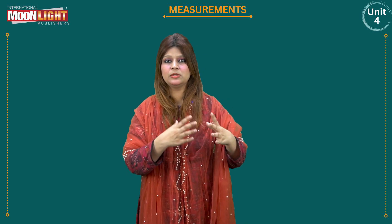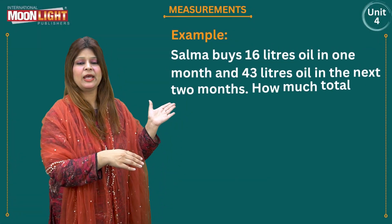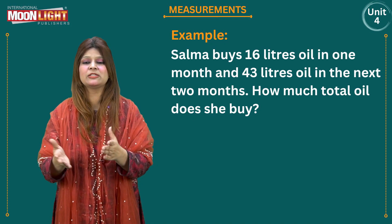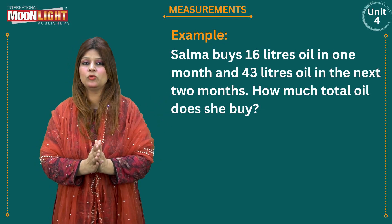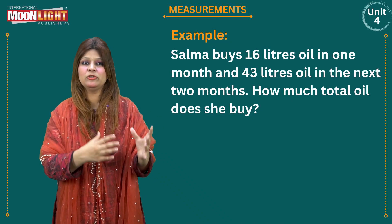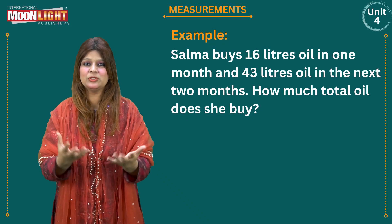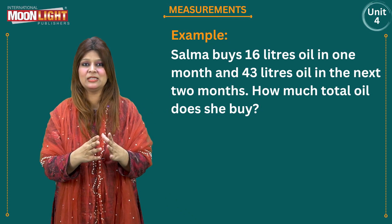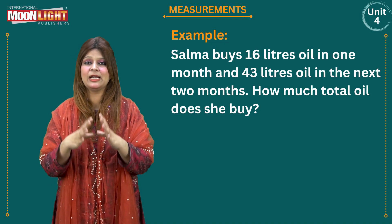We have so many situations in our real life that we are going to face. I have taken this example for you: Salma buys 16 liters of oil in one month and 43 liters of oil in the next month. How much total oil does she buy? Oil is a daily use item — you use it while cooking and frying. The word 'total' tells us this is an addition word problem.